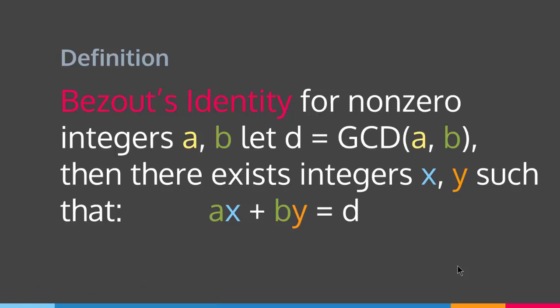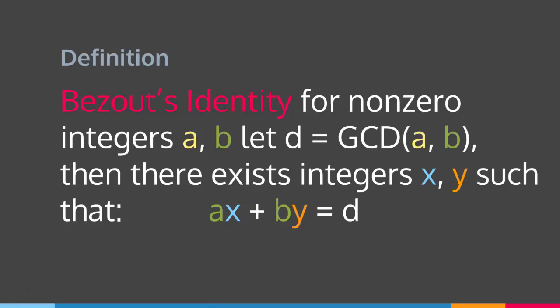So suppose we have a and b — non-zero integers — and d equals the greatest common divisor of a and b. Then we have a pair of integers x and y such that a times x plus b times y will equal the greatest common divisor of a and b. The x and y that we multiply times a and b to equal the gcd are called Bézout's coefficients.